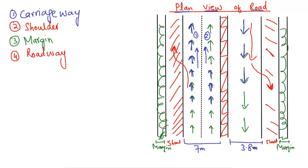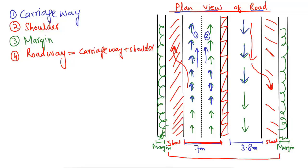The fourth component is the roadway. The roadway is basically the combination of the carriageway plus the shoulder. So the whole width of the road that includes the shoulder on both sides and the carriageway in between is called the roadway.